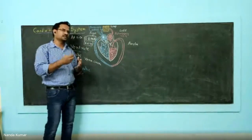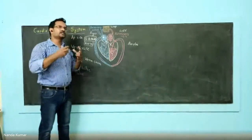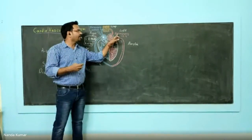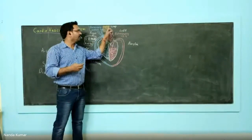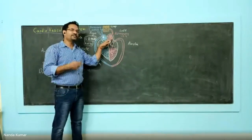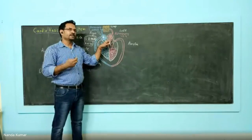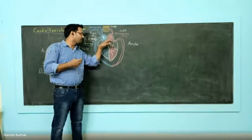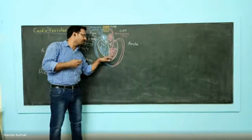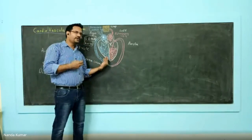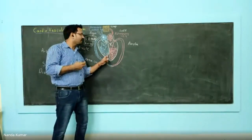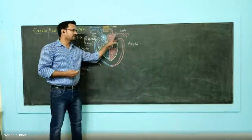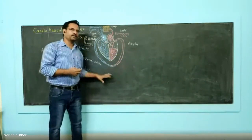In the lungs, gas exchange occurs and oxygenation of the blood takes place. The oxygenated blood is then carried by the pulmonary vein, and the blood gets into the left atrium. When the left atrium contracts, the valves allow the flow of blood into the left ventricle. When the left ventricle contracts, blood is taken to the aorta, which provides oxygenated blood to the entire body.